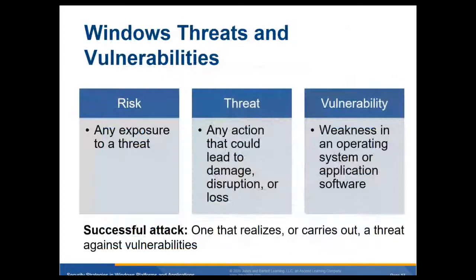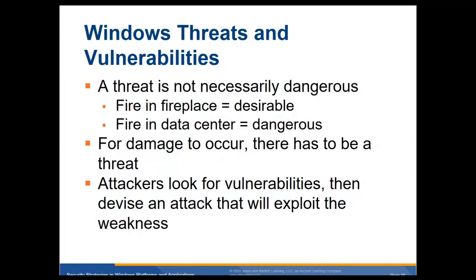Windows threats and vulnerabilities. Some different terms: Risk is any exposure to a threat. A threat is any action that could lead to damage, disruption, or loss of data or equipment. A vulnerability is a weakness of an operating system or application software that will allow a threat to get through. A successful attack is one that carries out a threat against a vulnerability. A threat is not necessarily dangerous — a fire in a fireplace is desirable, but a fire in a data center is not. Attackers look for vulnerabilities, then devise an attack to exploit that weakness.